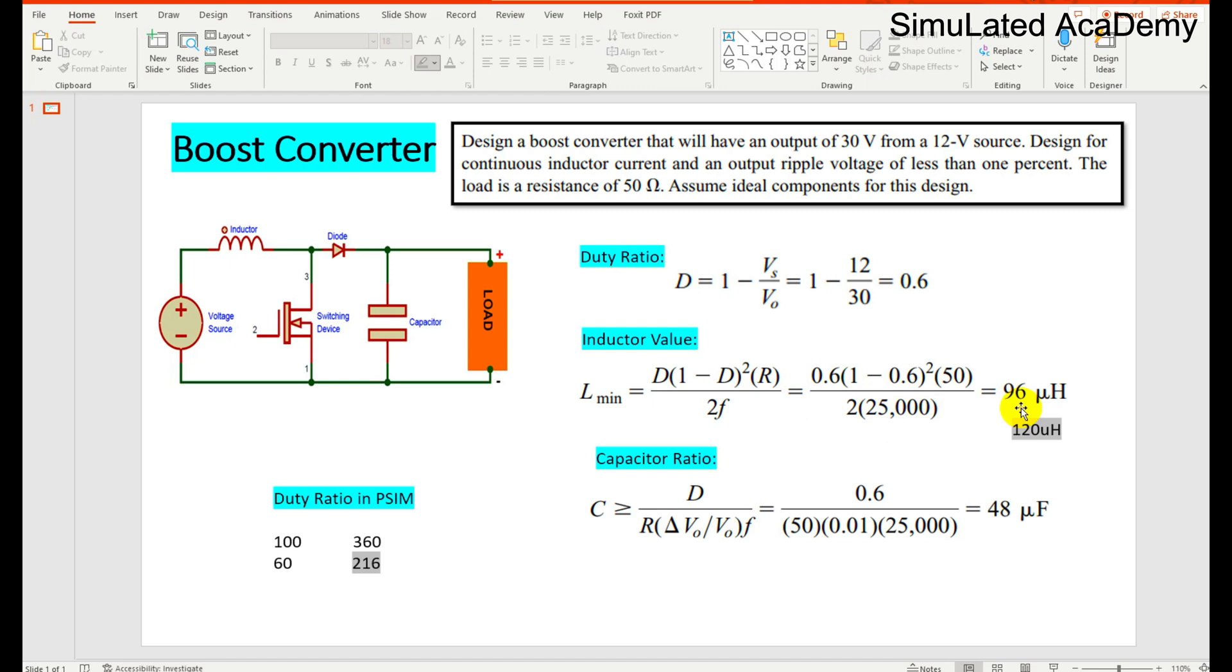To ensure continuous conduction mode, we will take 25% more than this minimum value of inductor. So that turns out to be 120 microhenries.